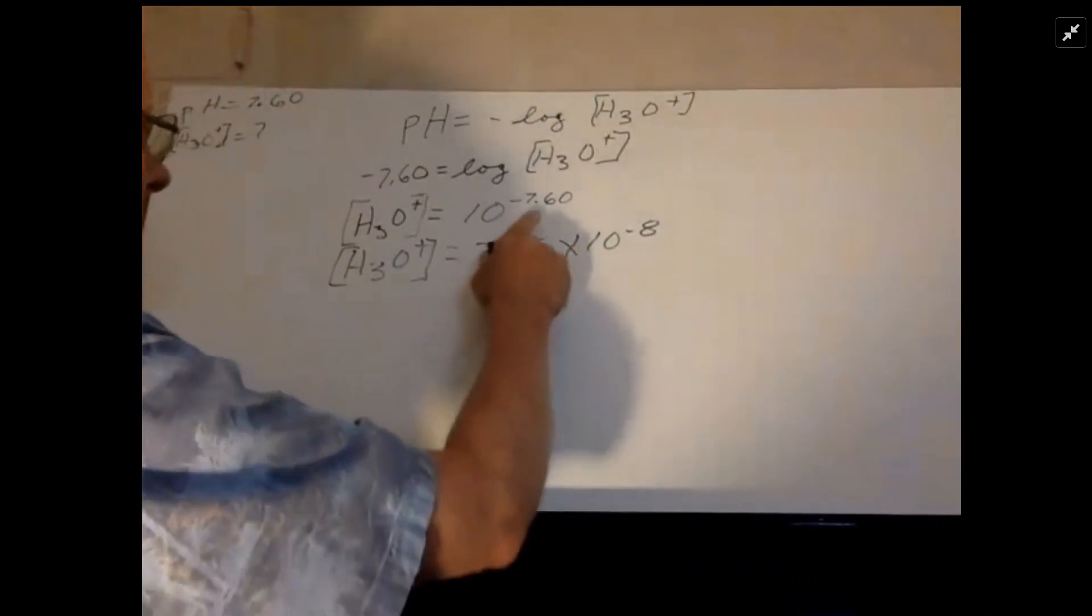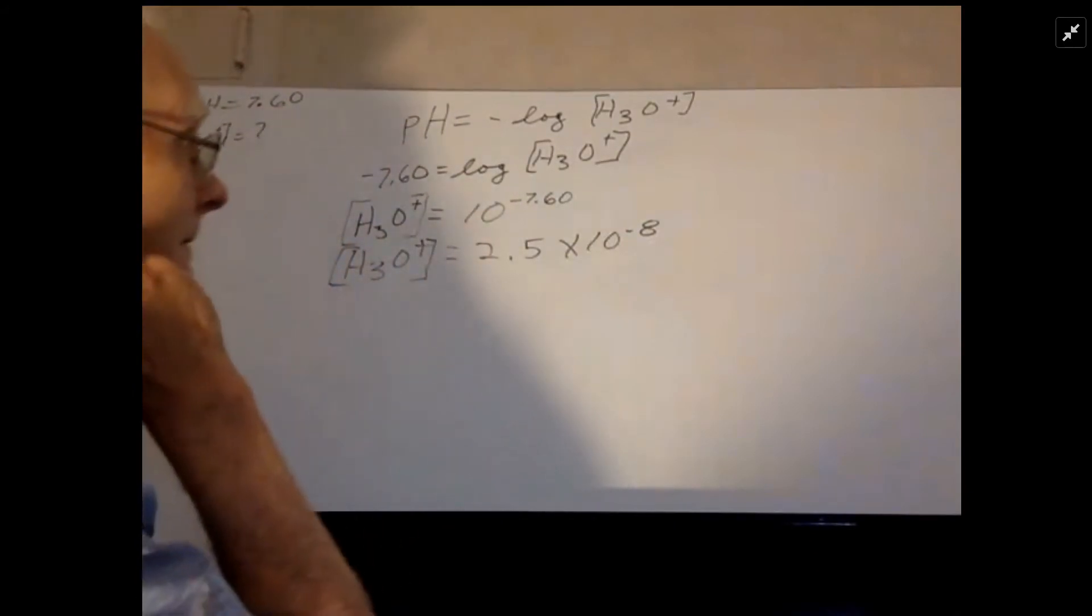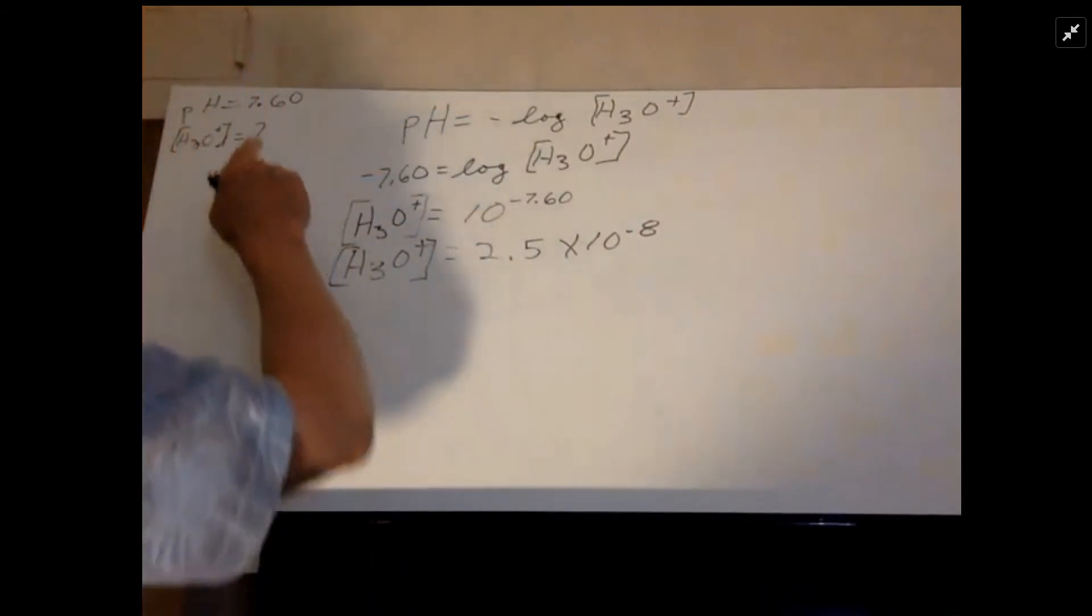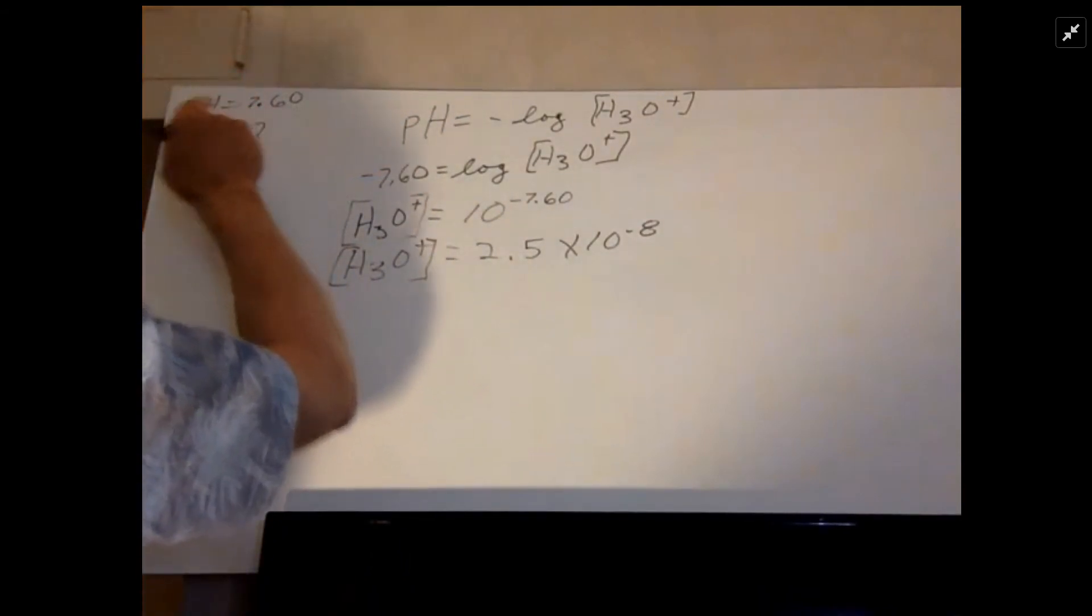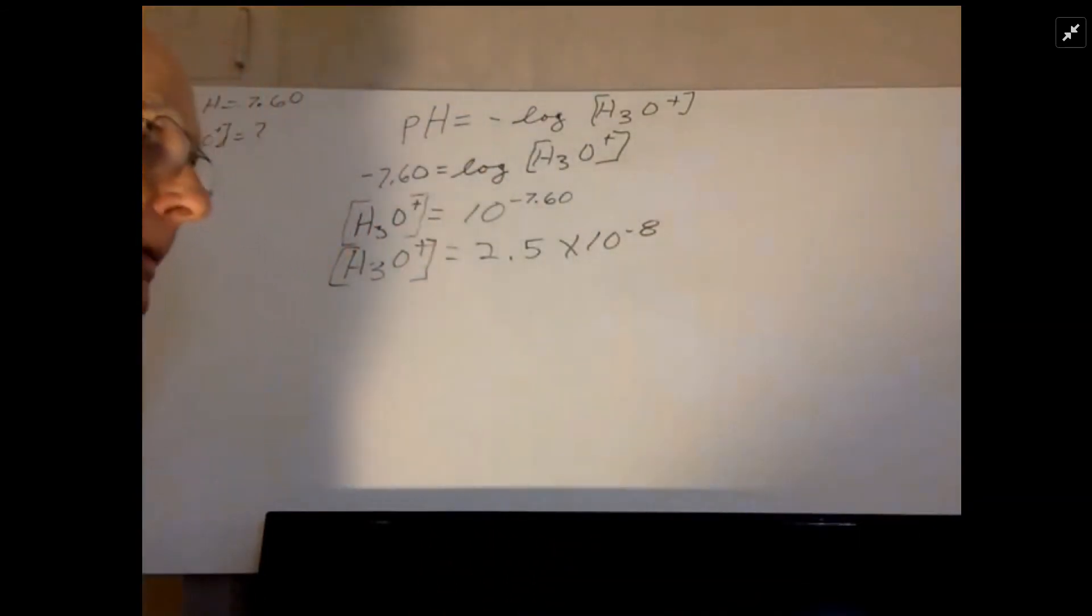Now it looks like I have three significant figures up here when I'm given the pH, but since the pH is an exponential function, the 7 here is really just sort of like a placeholder. It's telling me whether I have a really big number or a really small number.